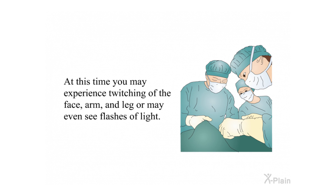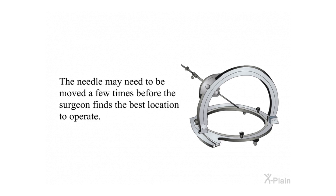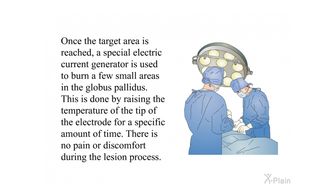At this time, you may experience twitching of the face, arm, and leg, or may even see flashes of light. The needle may need to be moved a few times before the surgeon finds the best location to operate. Once the target area is reached, a special electric current generator is used to burn a few small areas in the globus pallidus by raising the temperature of the tip of the electrode for a specific amount of time. There is no pain or discomfort during the lesion process.